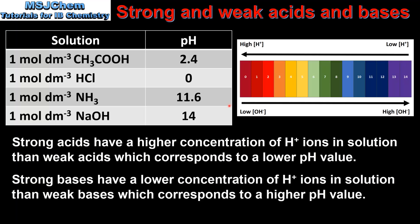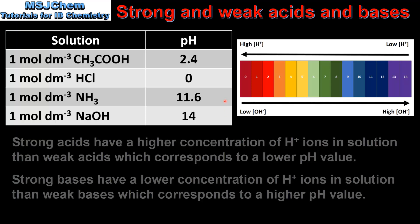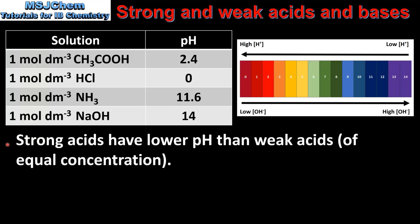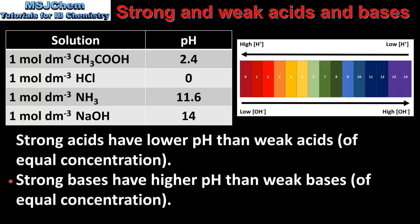Comparing strong and weak acids of equal concentration, strong acids have a lower pH than weak acids. To summarize: strong acids have lower pH values than weak acids of equal concentration, and strong bases have higher pH values than weak bases of equal concentration.